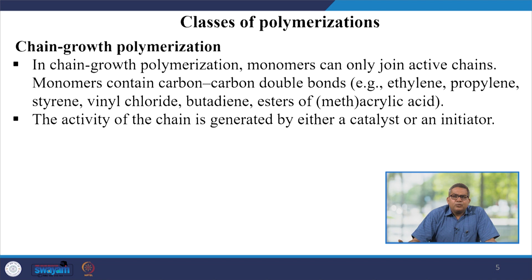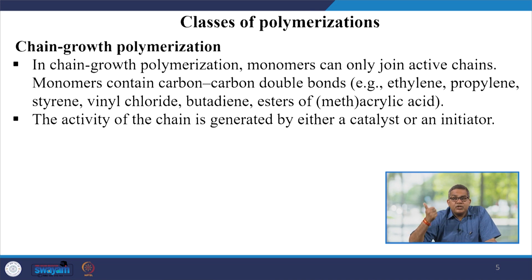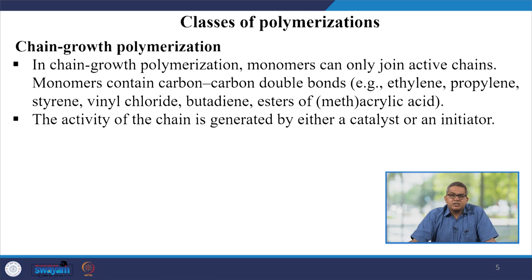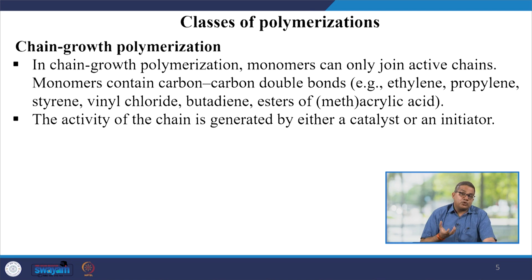In chain growth polymerization, monomers can only join active chains. Active chains must either have a double bond or some functional group present, and simultaneously the monomer should possess a similar type of property. The monomer contains the carbon-carbon double bond — like ethylene, propylene, styrene, vinyl chloride, butadiene, and esters of methyl acrylate. All these are the best candidates for chain growth polymerization. The activity of chain is generated by either a catalyst or an initiator to trigger the polymerization reaction.